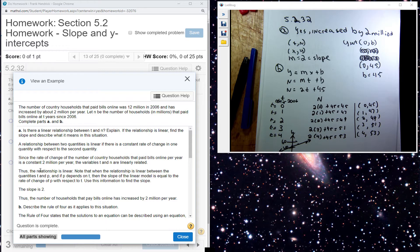What it means is that the rate of change of the number of country households that paid bills online is a constant change of 2 million a year.